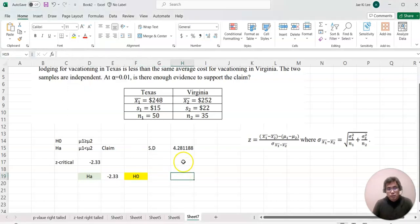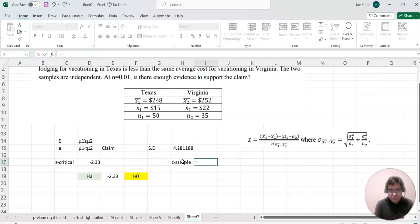Now z sample. In this case it equals x̄1, which is 248, minus x̄2, 252, minus zero. But because zero doesn't mean anything, I'm not going to write it. Then divide by our standard deviation value. That's our z sample. I'm going to bring this down.